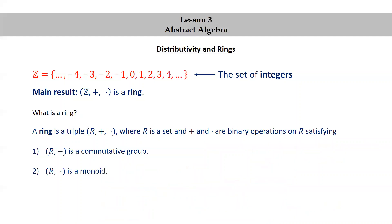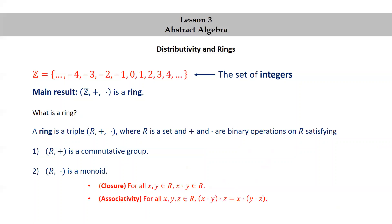The next meta-property is that R together with multiplication is a monoid, consisting of: closure (for all x, y in R, x × y is in R); associativity (x × (y × z) = (x × y) × z); and identity (there exists 1 in R such that 1 × x = x × 1 = x).